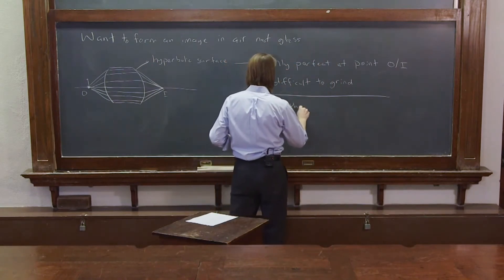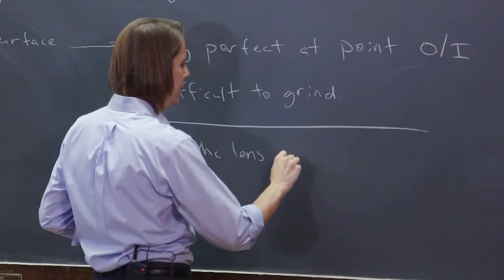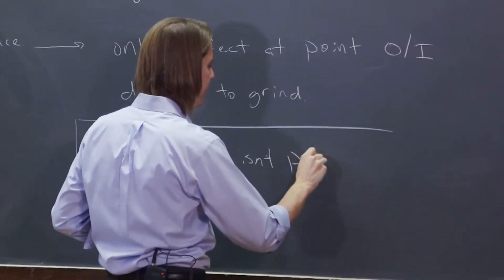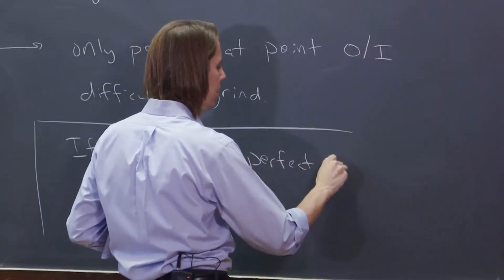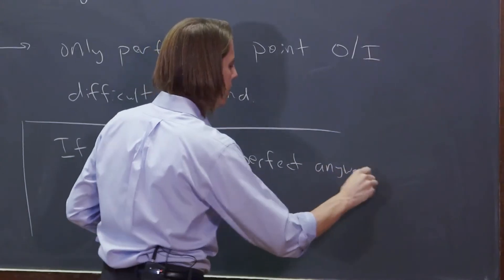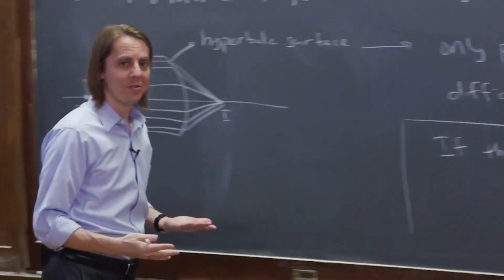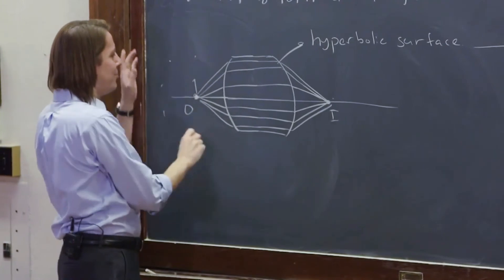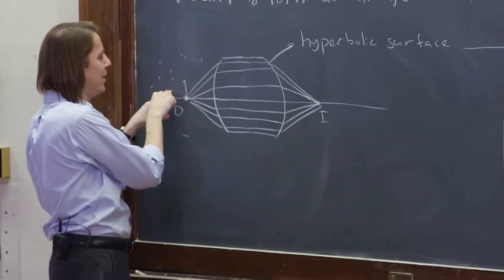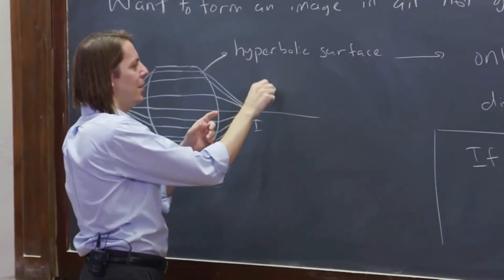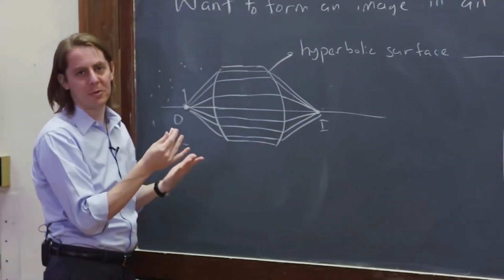But if the lens isn't perfect anyway, because what you'll find is there is no perfect lens. There's no geometry that's going to make this happen. For every point in space that you have a point source of light, it's going to make a point source image. No geometry really does it.